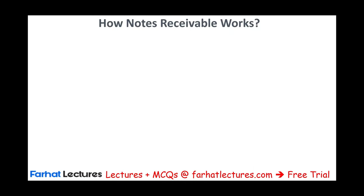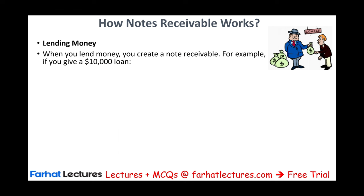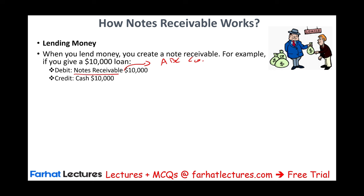Let's look at how Notes Receivable works. One use is when one party lends money to another party. When you lend money, you create a Notes Receivable. For example, you give a $10,000 loan — you will debit Notes Receivable for ABC Company and credit Cash. This is how Notes Receivable are created. One way is to lend money.